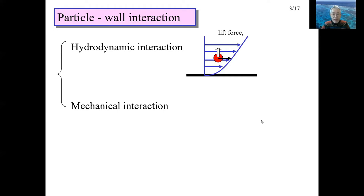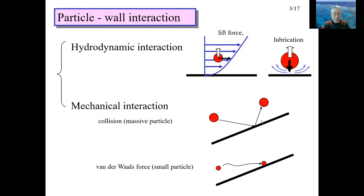The lift force was explained in detail in Lecture 3. When a particle rapidly approaches the wall in the normal direction, a force that blocks the proximity of the particle acts on it — this is usually called lubrication, and is also a hydrodynamic interaction. Solid-mechanical interaction is a collision or contact between the particle and the wall.